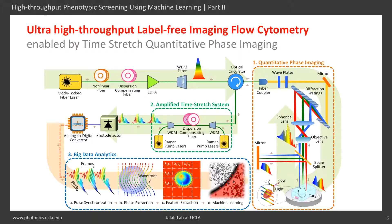In the digital domain, the signals are synchronized, demodulated, and fused into 2D images for feature extraction. Multiple biophysical features of individual cells form a hyperdimensional feature space in which supervised learning is performed for cell classification.